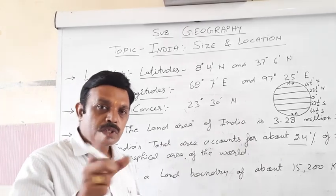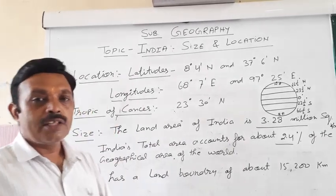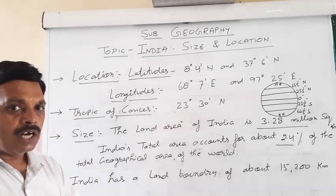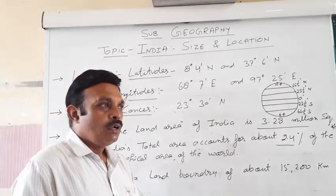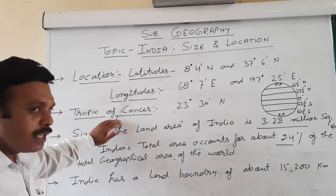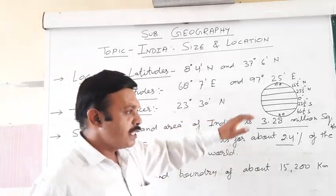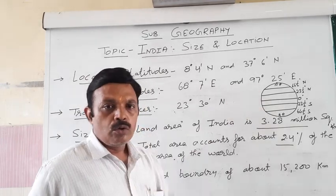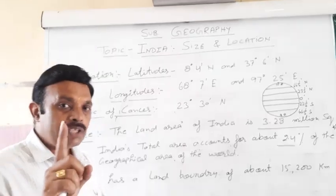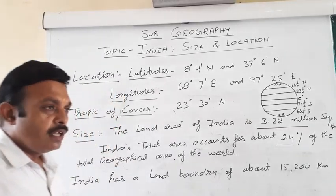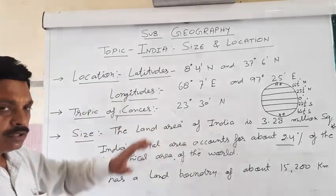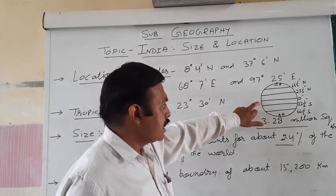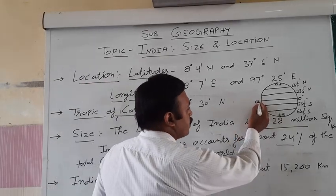We can say in Hindi: Bhumadhyaya Rekha — this is another name for the equator. We also call it Vishwat Rekha. Vishwat Rekha and Bhumadhyaya Rekha are the most important latitudes of our earth. The Tropic of Cancer is this important latitude.